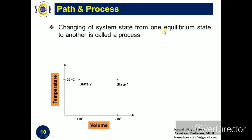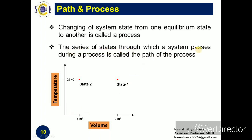The changing of a system state from one equilibrium state to another is called a process. Whenever a process occurs, the system changes its state. However, the process cannot occur instantaneously. For example, the system volume cannot reduce from 2 m³ to 1 m³ suddenly — it first reduces to 1.9, then 1.8, then 1.7, and finally reaches 1 m³. The series of states through which a system passes during a process is called the path of the process.